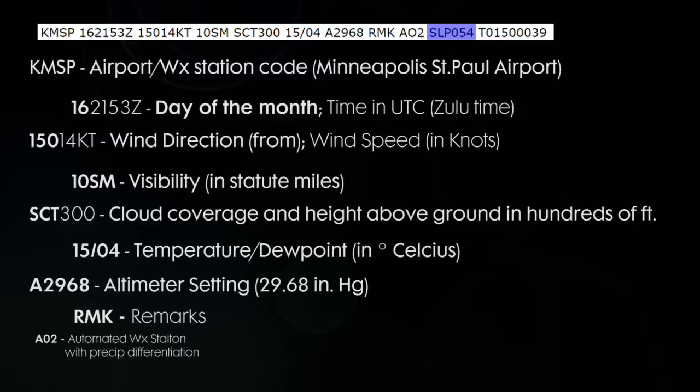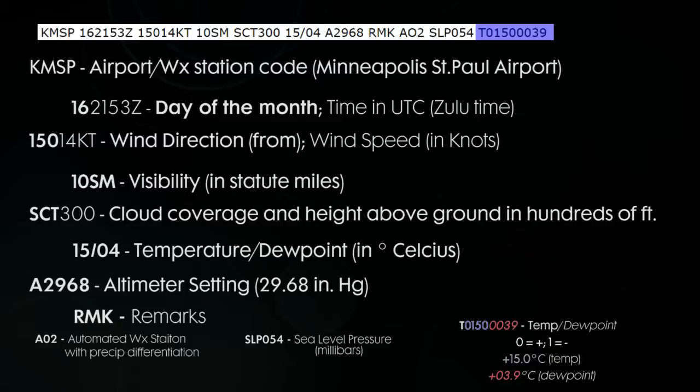The next section is sea level pressure in millibars — that would be 1005.4 millibars, if you're really interested. The very last part is temperature and dew point to the nearest tenth of a degree. The way it's split up is the first four digits is the temperature, and the last four digits is the dew point. The first number of each group is either a zero or a one — if it's a zero, it's a positive temperature; if it's a one, it's a negative temperature. So 0150 is plus 15.0 degrees Celsius, and the dew point is plus 03.9 degrees Celsius.